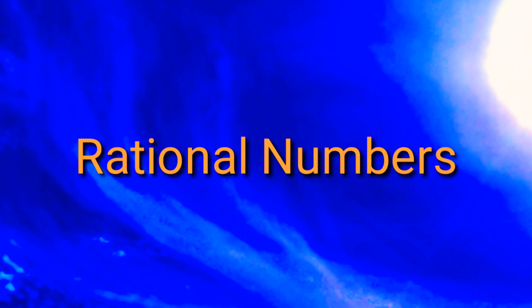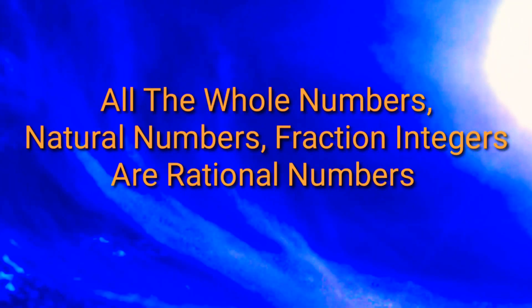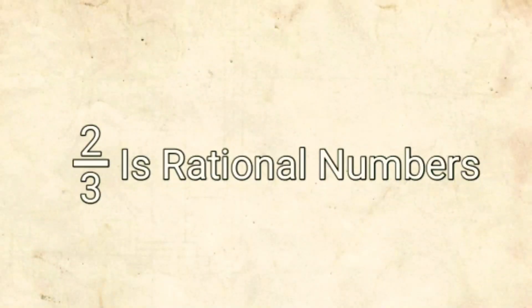Rational numbers: the numbers which can be written in the form of p/q, where q is not equal to 0, are called rational numbers. All whole numbers, natural numbers, fractions, and integers are rational numbers. For example, 2/3 is a rational number, but 2/3 is also a fraction. The only difference between rational numbers and fractions is that fractions are always positive.